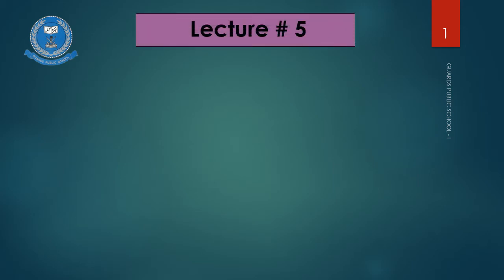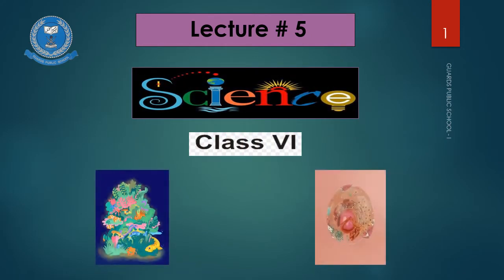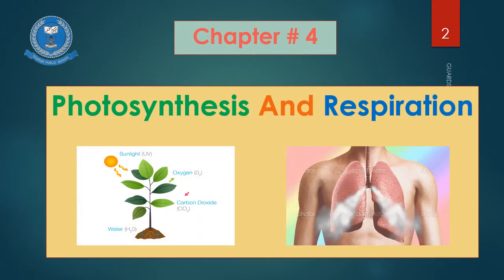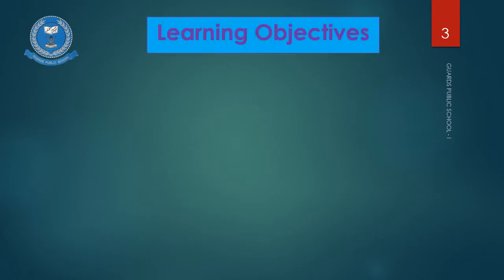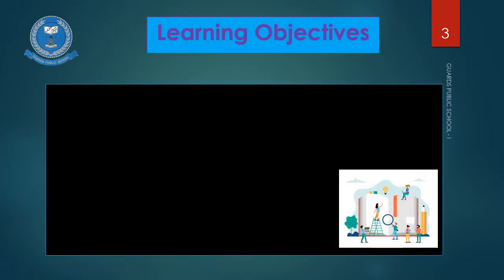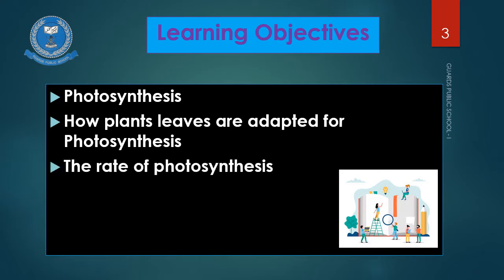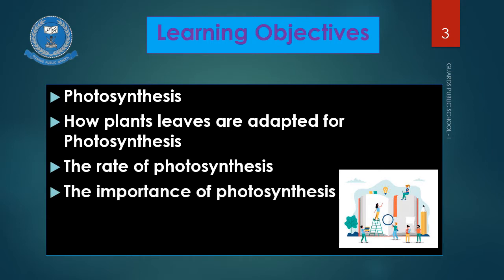Bismillahir Rahmanir Raheem. Assalamu alaikum students. I am your science teacher Mr. Traizhar and today we are starting our lecture number 5. Our chapter number 4 is Photosynthesis and Respiration. Learning Objectives: In this chapter, we will discuss about the process of photosynthesis, adaptation of leaves for photosynthesis, factors affecting the rate of photosynthesis, the importance of photosynthesis, respiration, and gases in balance.